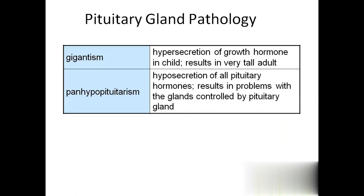Gigantism: the person will grow very tall because of hypersecretion of growth hormone - usually reaching 6.5 to 7.5 feet in height. Pan-hypopituitarism: all pituitary hormones decrease their secretions, and we call that condition pan-hypopituitarism.